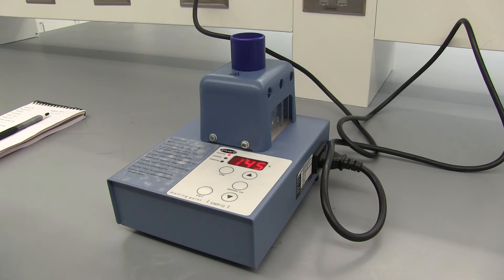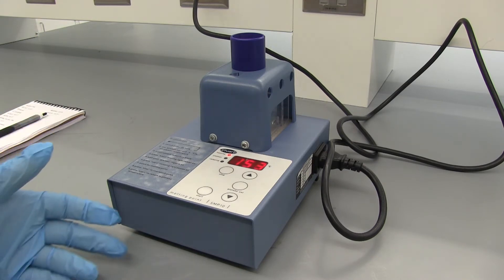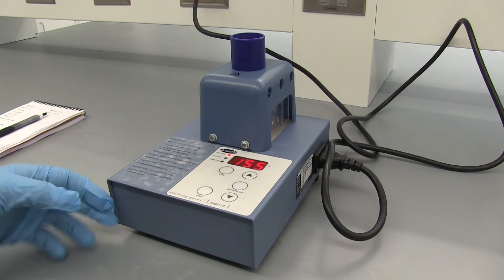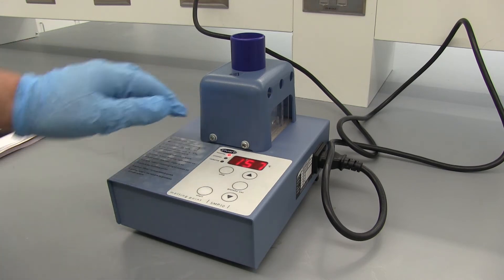Alright, so our fast melting point started melting around 126 degrees Celsius and ended around 131 degrees Celsius. Our fast melting point is going to be a little bit high usually because it takes a bit of time for the heat to transfer from the heating block to the sample.